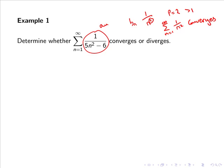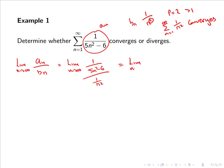Now let's conduct the limit comparison test. We take the limit as n goes to infinity of an divided by bn — that is, the limit as n goes to infinity of 1 over 5n squared minus 6, divided by 1 over n squared. Division is simply the opposite of multiplication, so we can write this as the limit as n goes to infinity of 1 over 5n squared minus 6 multiplied by n squared over 1, or simply the limit as n goes to infinity of n squared divided by 5n squared minus 6. Calculating this limit by considering the leading terms or dividing each term by the highest power of n gives an answer of 1 over 5.